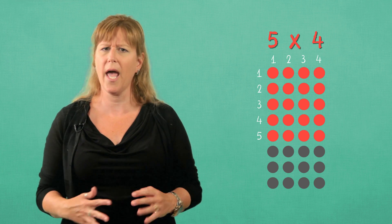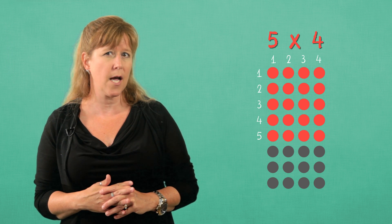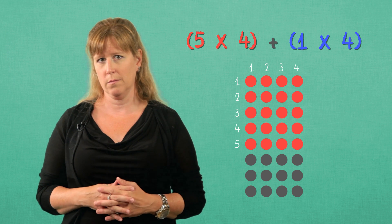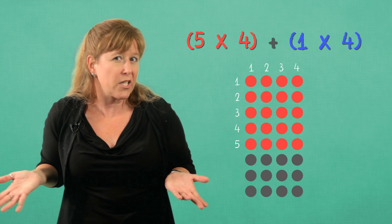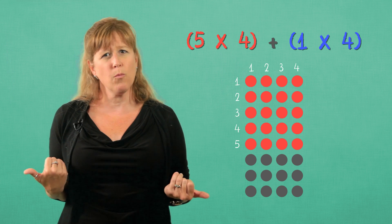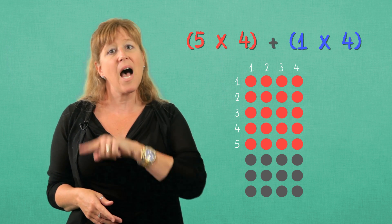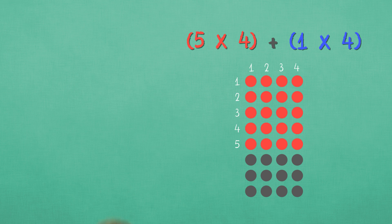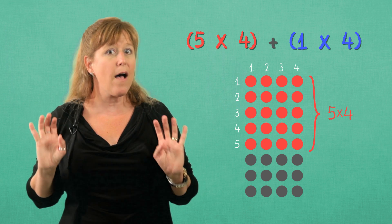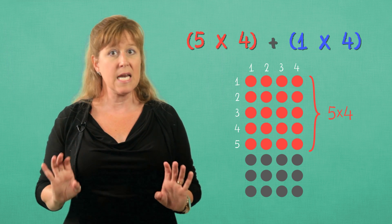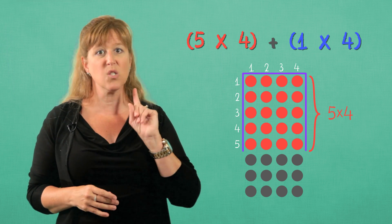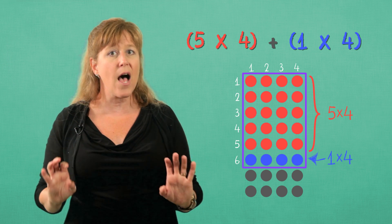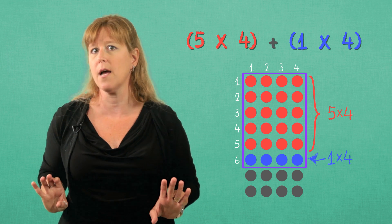One more order? Now I want to represent 5 times 4 in parentheses plus 1 times 4. I don't want to throw away a perfectly good array — why don't we represent it here? I want to box in an array that would represent this. We have 5 times 4 here already, so we need to box in this shaded area plus one more row of 4. The boxed area represents 5 times 4 plus 1 times 4.